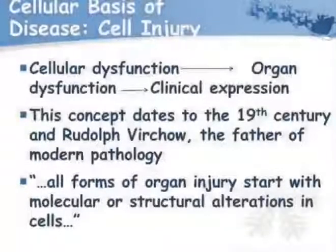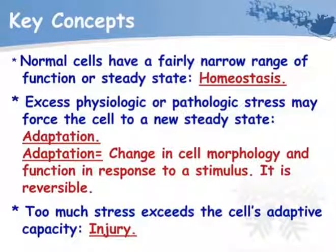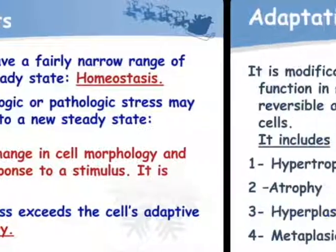The cellular basis of disease is cell injury, leading to cellular dysfunction, then organ dysfunction — this is the clinical expression. This concept dates to the 19th century and Rudolf Virchow, who is the father of modern pathology. All forms of organ injury start with molecular and structural alterations in cells. Normal cells have a fairly narrow range of function — this is homeostasis. Excess physiologic or pathological stress may force the cell into a new steady state, i.e., adaptation. Too much stress exceeds the cell's adaptive capacity — that is called injury.